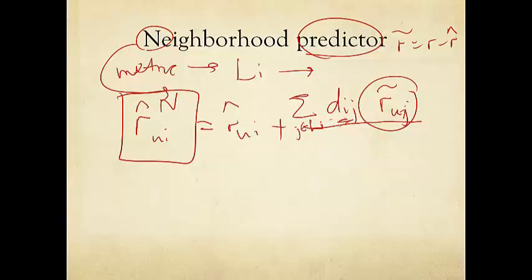So if dij is positive, we're adding to the prediction. If it's negative, we're subtracting from that.